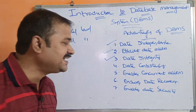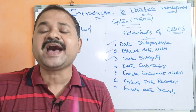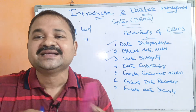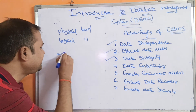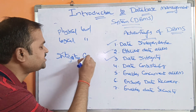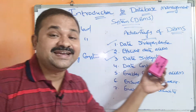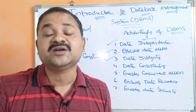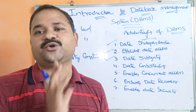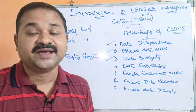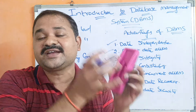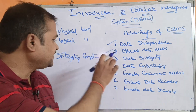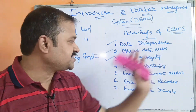The next advantage is data integrity. Data integrity means the data in the DBMS must be valid, enforced through integrity constraints. For example, a date of birth can never be a future date — it should always be a past date. Similarly, if we impose a primary key, it must be unique and must contain a value. Enforcing these constraints is called data integrity.